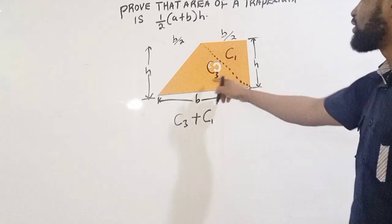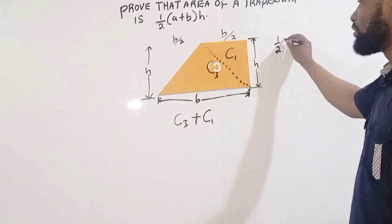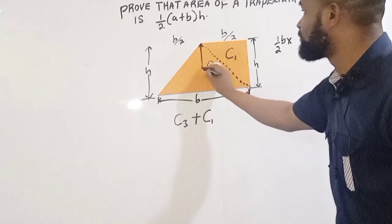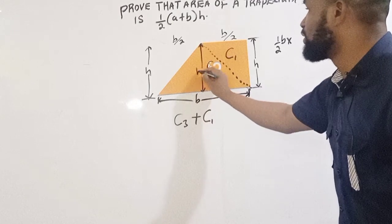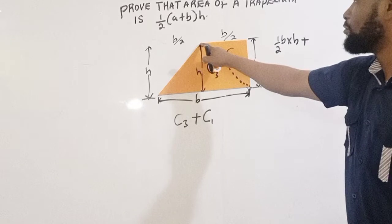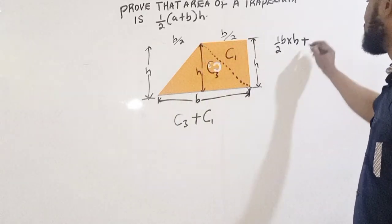So in this case, C3 is going to be half base times height, which is this height, then plus this and this. And this also, another triangle, is another kind of triangle.